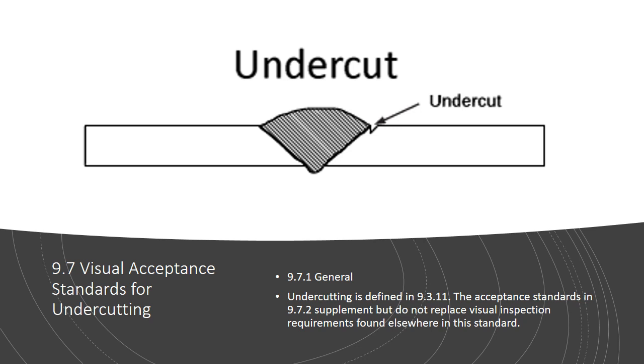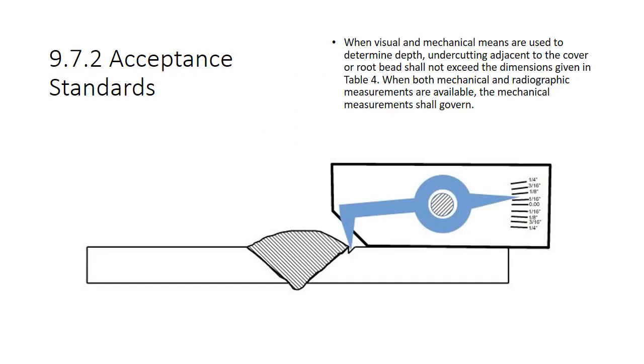9.7 Undercutting. 9.7.1 General. Undercutting is defined in 9.3.11. The acceptance standards in 9.7.2 do not replace visual inspection requirements found elsewhere in this standard. When visual and mechanical means are used to determine depth, undercutting adjacent to the cover or the root bead shall not exceed the dimensions given in Table 4. When both mechanical and radiographic measurements are available, the mechanical measurements shall govern.